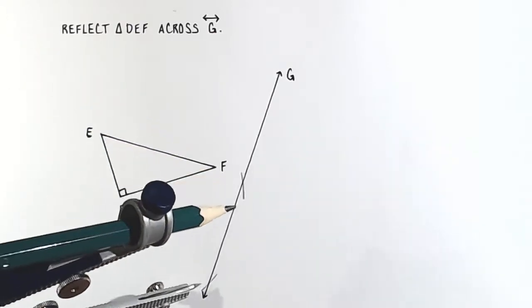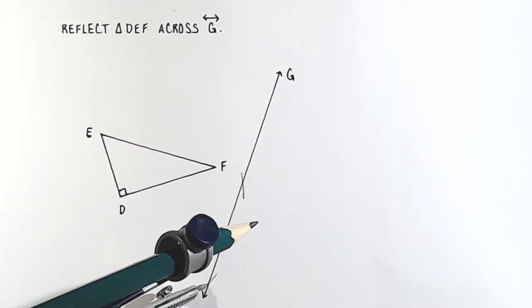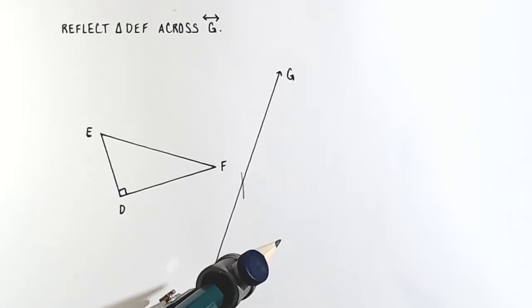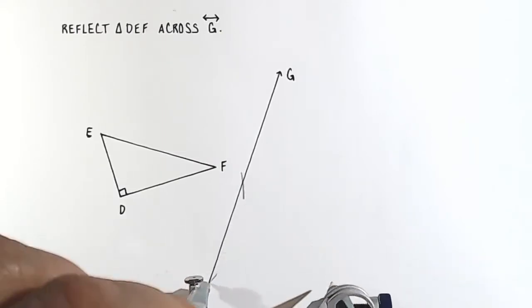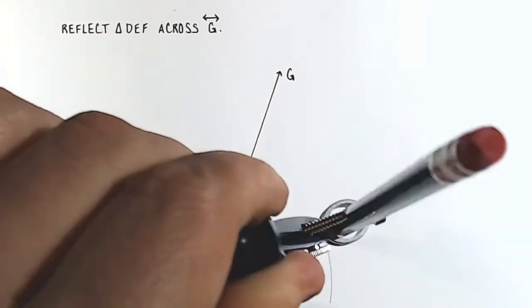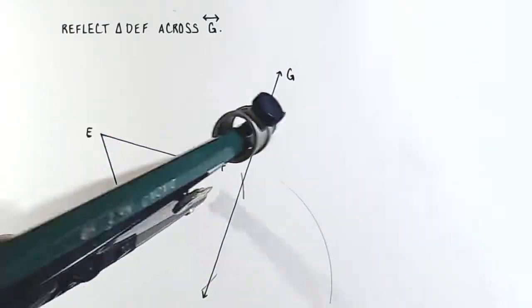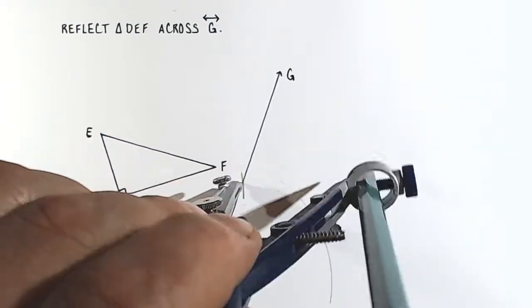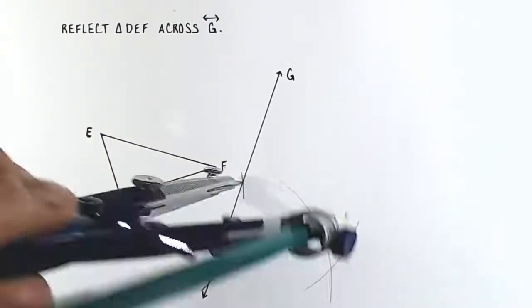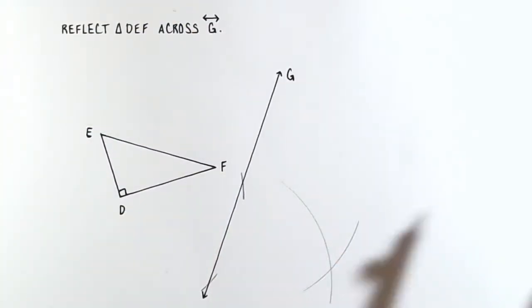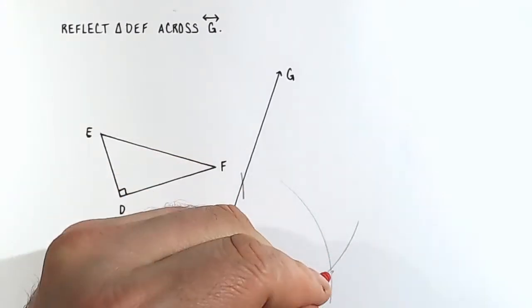Now bring your compass point over to each of the arcs, and draw a bigger arc, so you can see where they cross each other on the other side of the line of reflection. So that intersection point of those two arcs is point D prime.